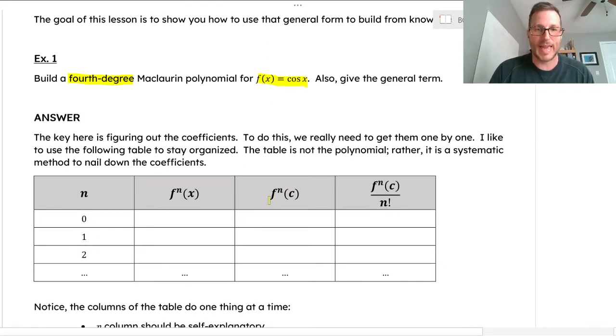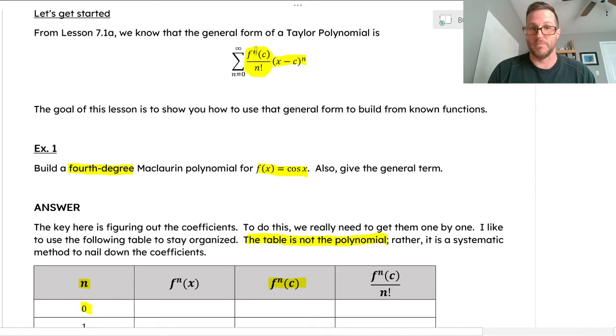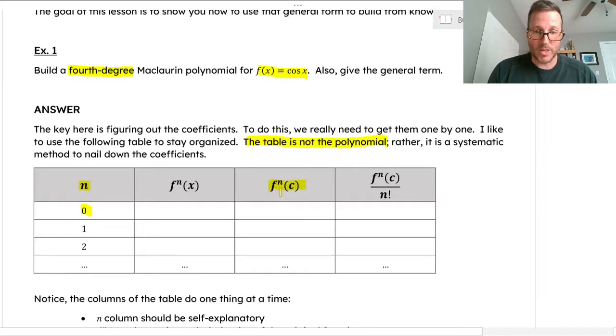If I look back at the general form, the x minus c to the n part is spoken for. But this leading coefficient—the nth derivative of f at c divided by n factorial—that is the kicker here. We've got to figure out what the coefficients are. I like to use a table. This table is not the polynomial, but it is a systematic way to figure out what the coefficients are.